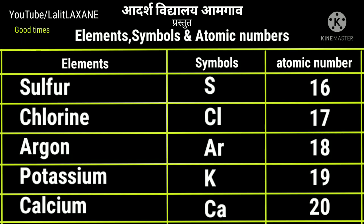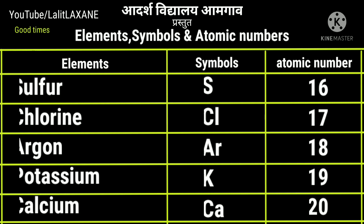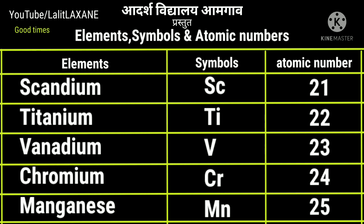Chlorine Cl, atomic number 17. Argon Ar, atomic number 18. Potassium K — it stands for kalium — with atomic number 19. Calcium Ca with atomic number 20.